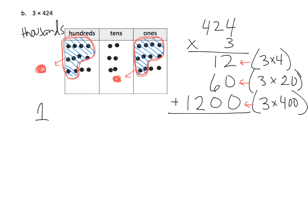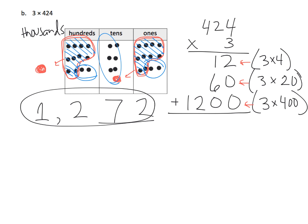Those 10 hundreds are gone because they got bundled together. So what do we end up with? We have one in the thousands place, two in the hundreds place, seven in the tens place, and two left over in the ones place — so our place value chart gives us 1272. Now let's add our partial products: two ones plus zero plus zero is two ones; one ten plus six tens plus zero tens equals seven tens; no hundreds plus no hundreds plus two hundreds gives us two hundreds; and we only have one thousand, so our answer is one thousand two hundred seventy-two.